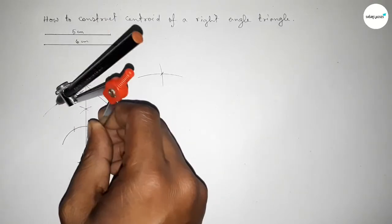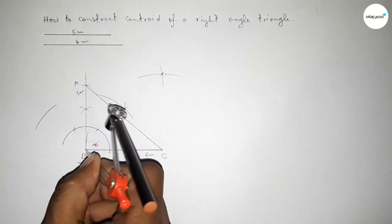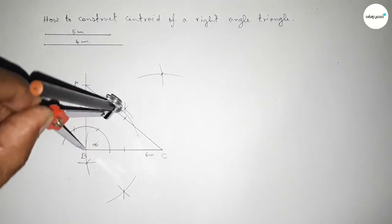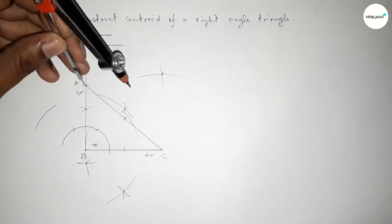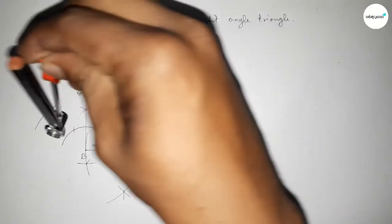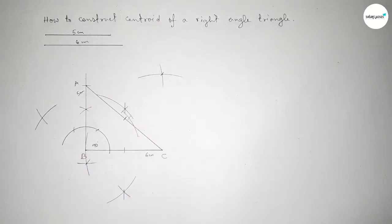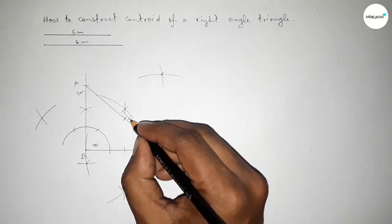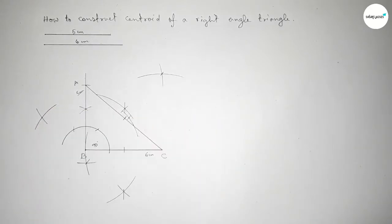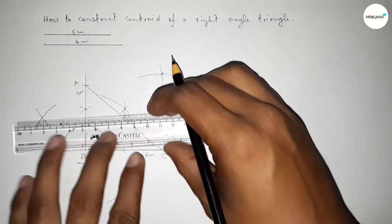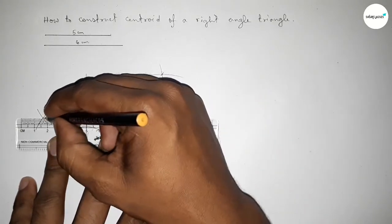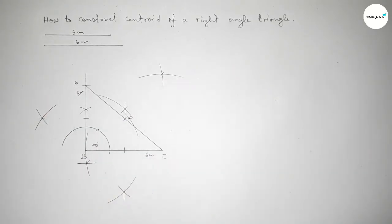Next, bisecting line AB. Putting the compass here and taking greater than half of AB, drawing an arc here and drawing another arc. With the same length, putting the compass here and cutting arcs on both sides — both curves intersect at two points. Joining this line, which bisects the line AB at a point.